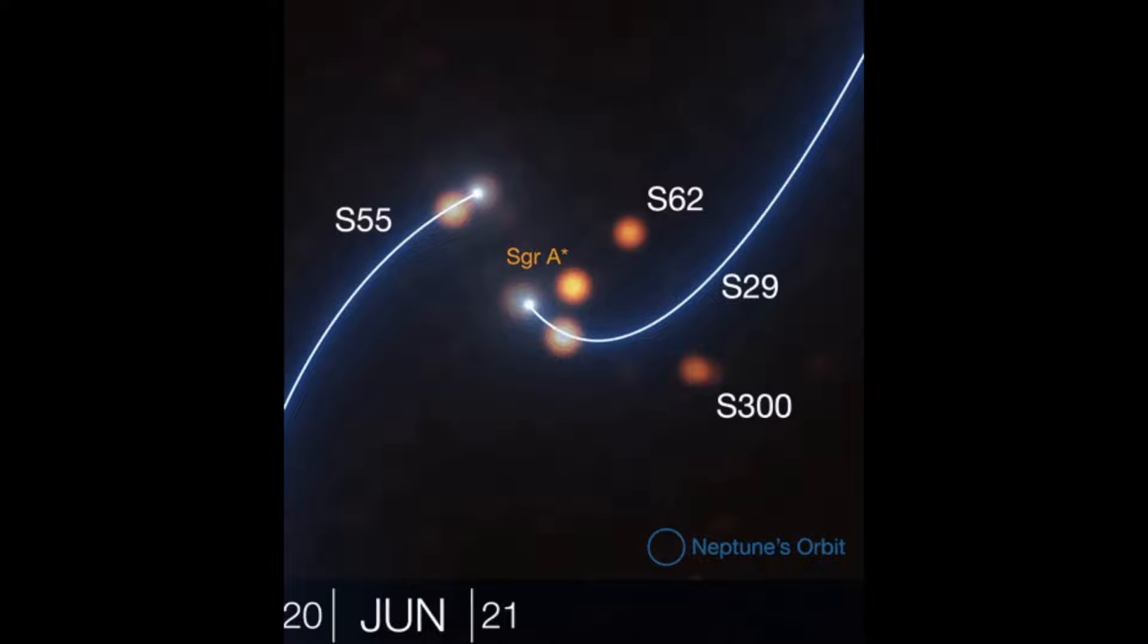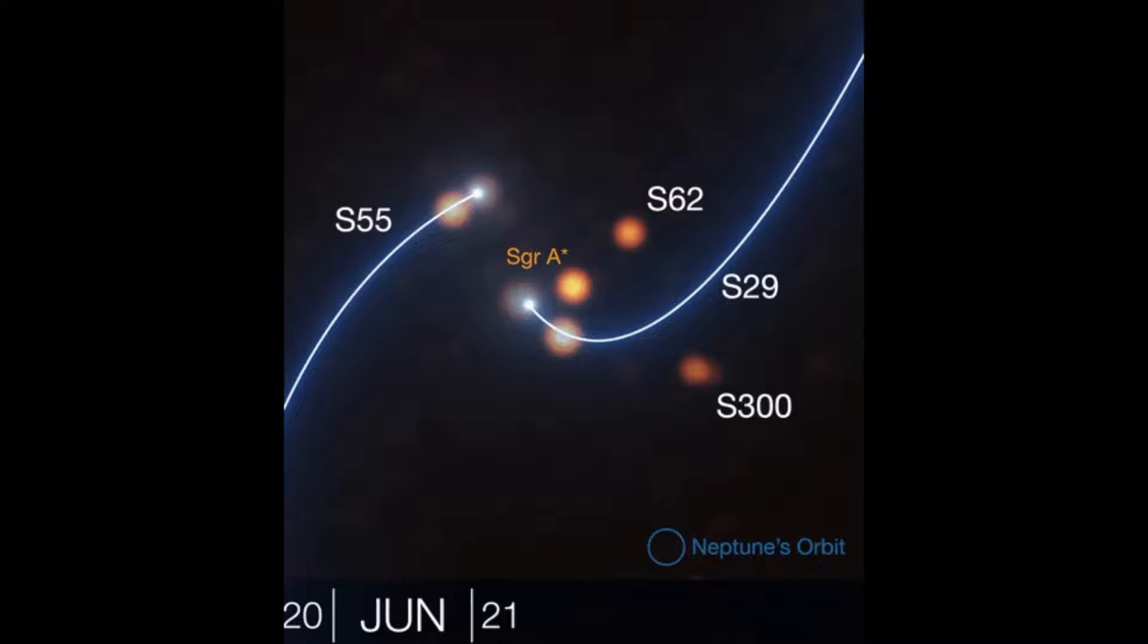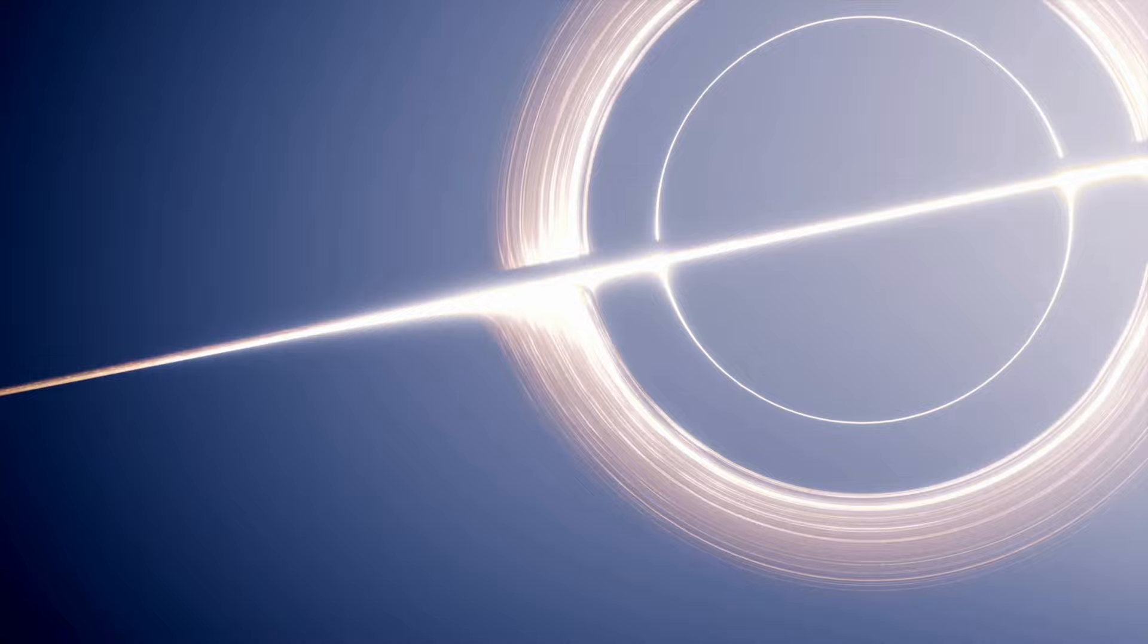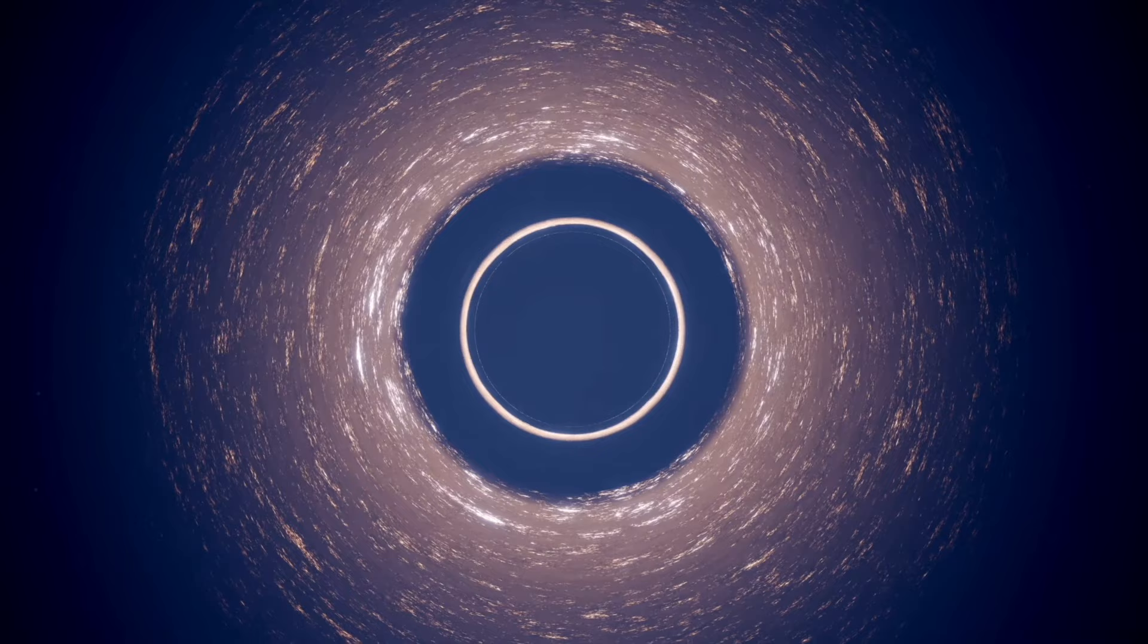Fast forward to May 2022, astronomers achieved another milestone by revealing the very first image of the accretion disk encircling the event horizon of Sagittarius A-star. This achievement was made possible using the Event Horizon Telescope, a global network of radio observatories. The image confirms its identity as a black hole.